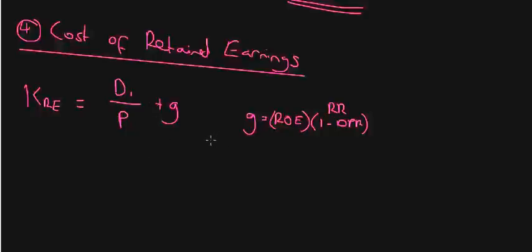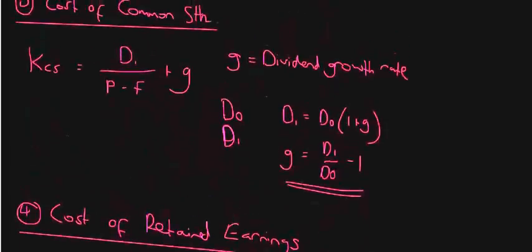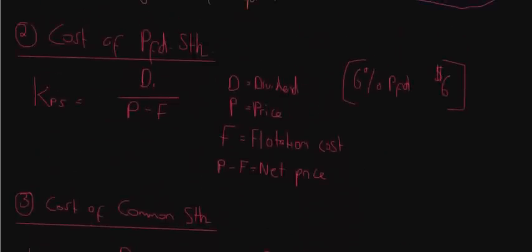And again, we already explained that the cost of retained earnings are really the returns that investors expect from the company's reinvestment of the earnings. Or the other way to think about it is it's the opportunity cost of not buying back their own stock and then earning dividends on the stock that they buy back, which is a pretty interesting point. This is just calculated in the same way. Obviously all of these answers are coming out as percentages.